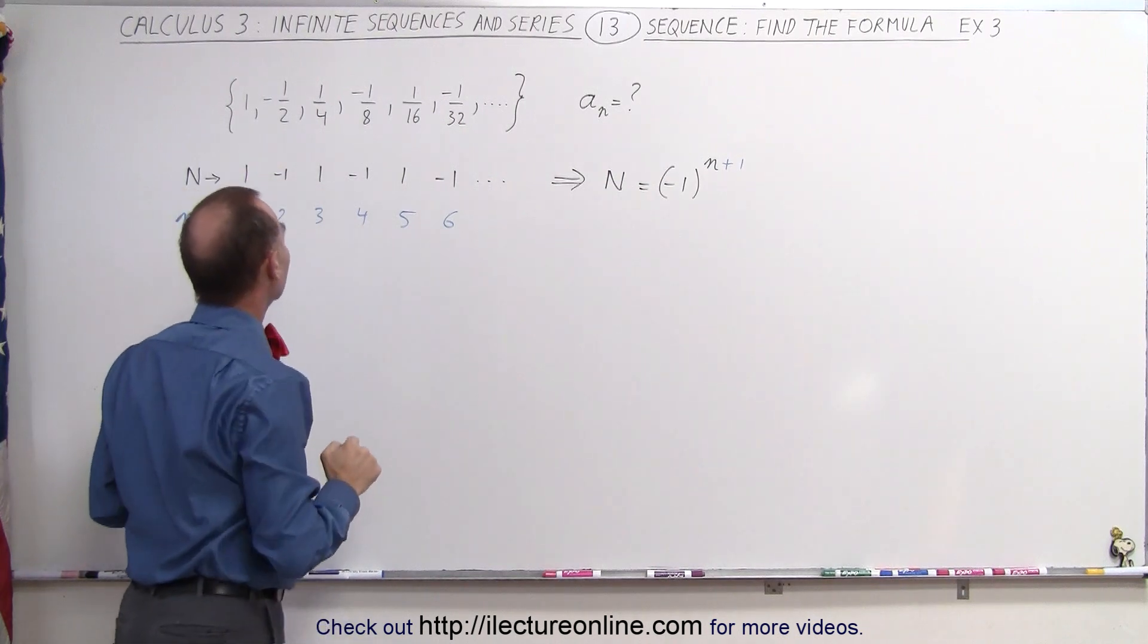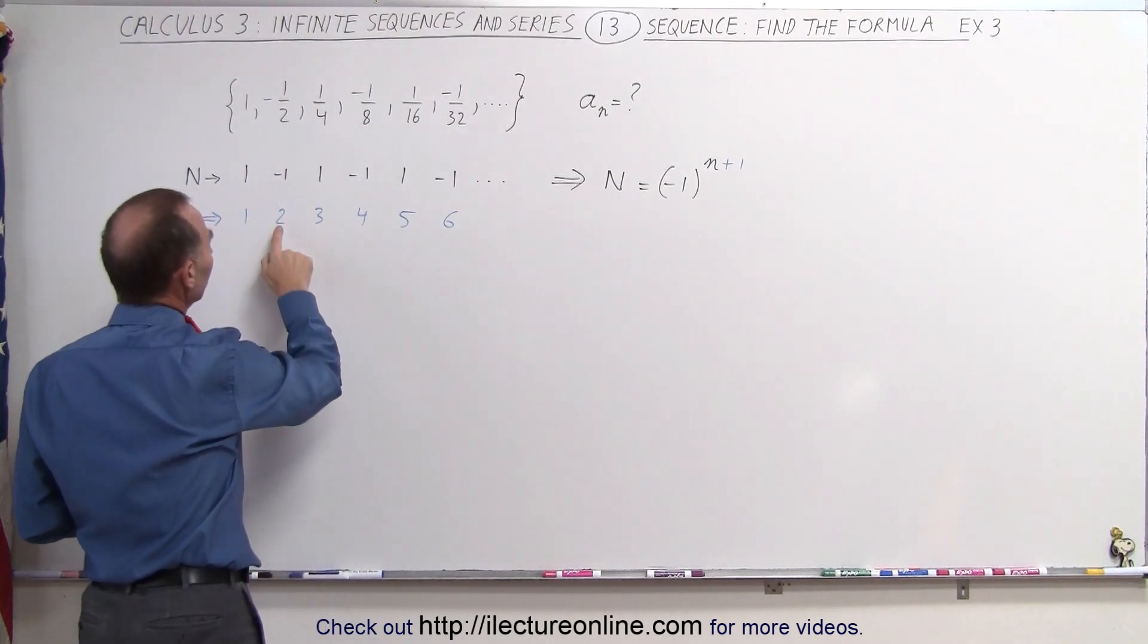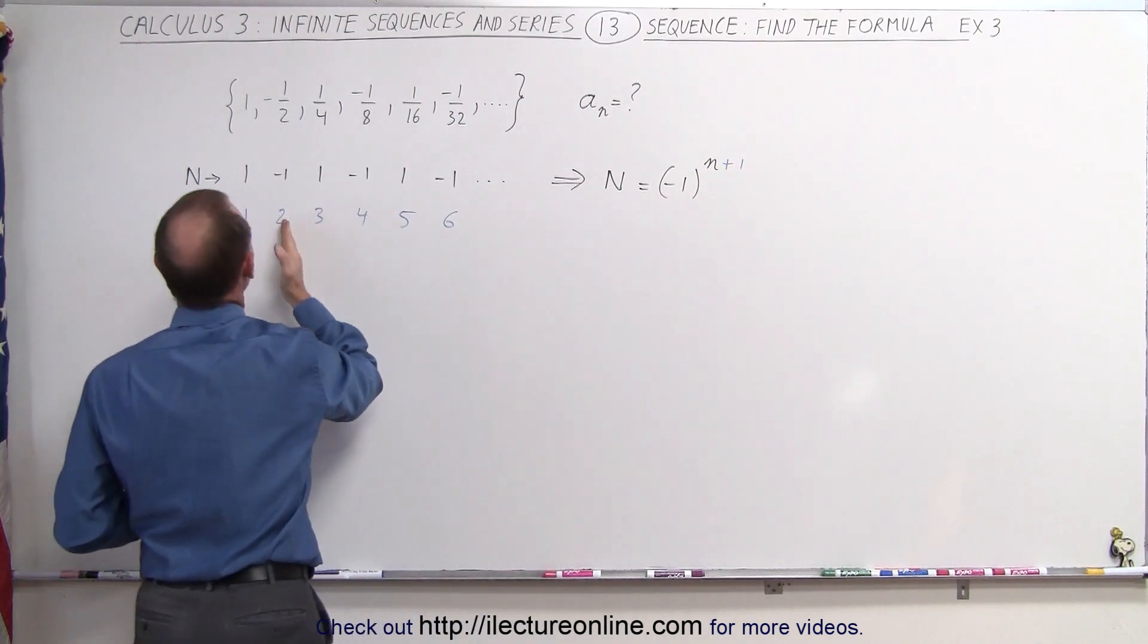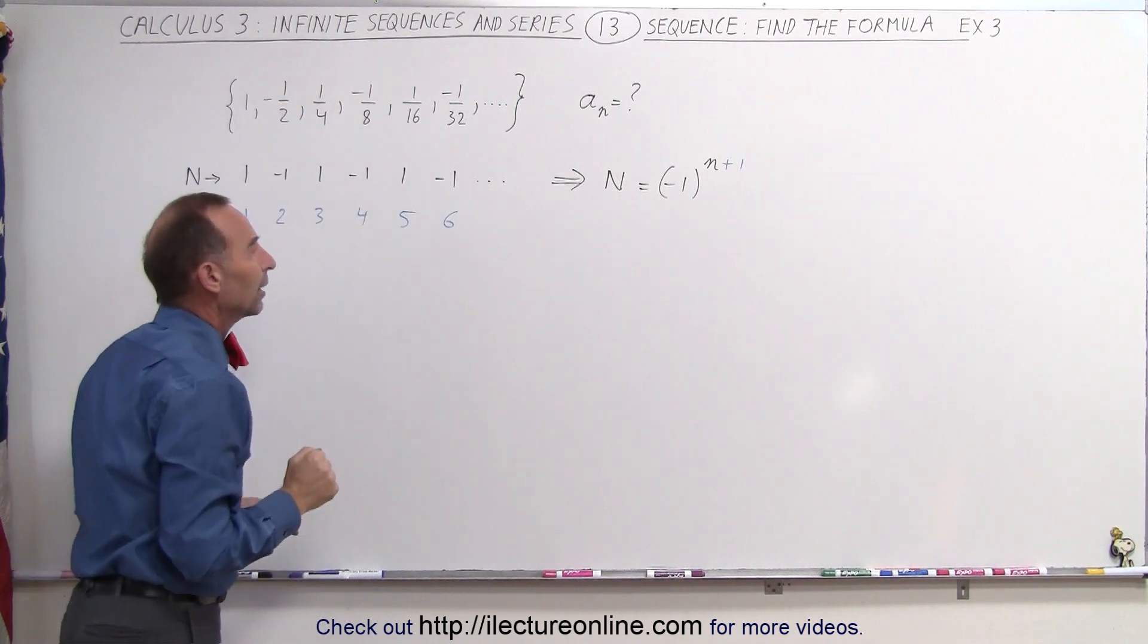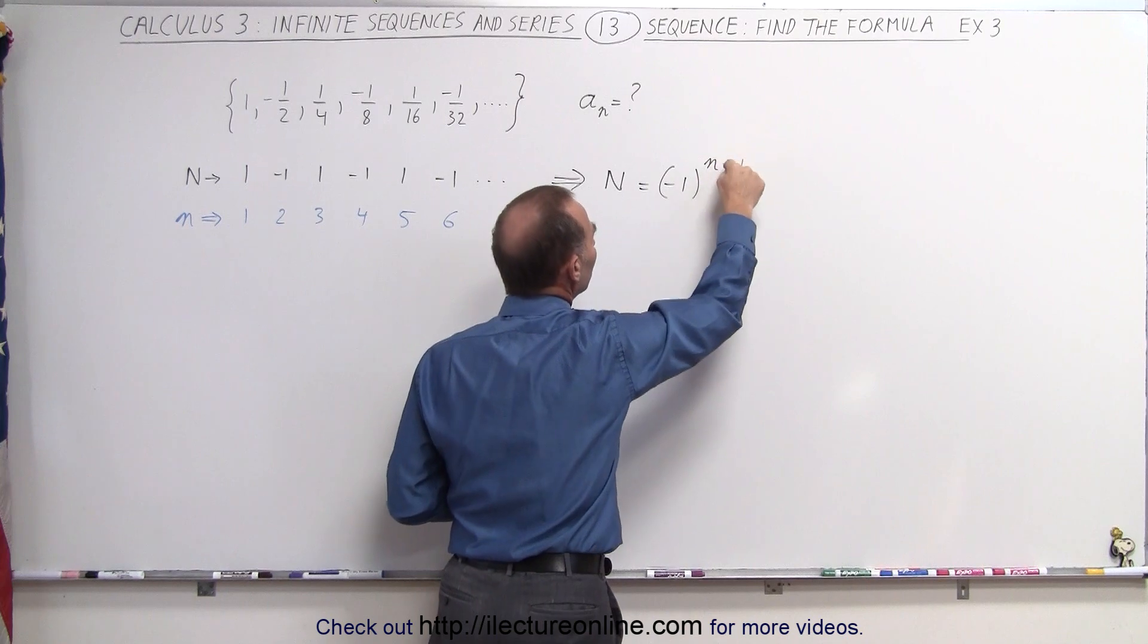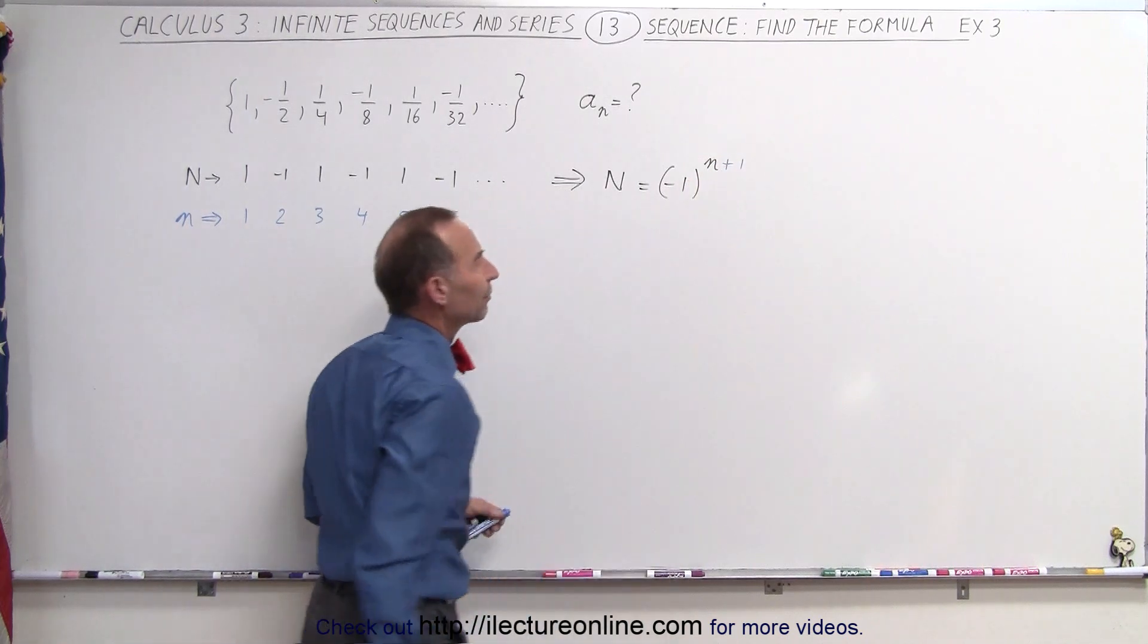That gives us the right value for the numerator. When n is equal to two, we have two plus one, which is equal to three. Negative one to the third power is a negative one. And sure enough, we get a negative one in the numerator. So it looks like we've made the proper adjustment to the exponent here to express the proper value for the numerator.